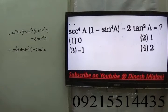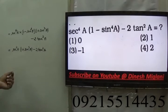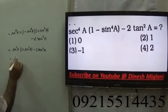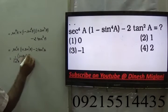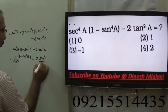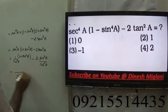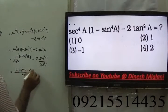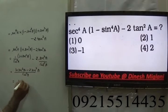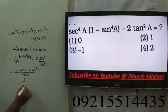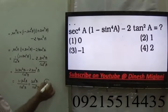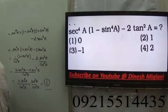Simplifying further: (1 - sin²A)/cos²A = cos²A/cos²A = 1. Hence the answer to this question is 1, which is the second option.